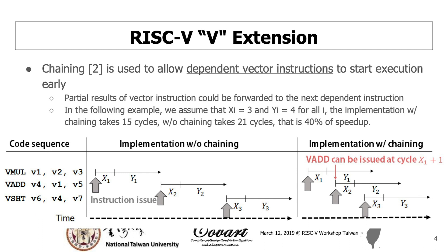The chaining mechanism is used to allow dependent vector instructions to start execution as soon as possible. If we can let the partial result of the vector function unit be forwarded to the next dependent vector instruction, the next vector instruction can be issued early.